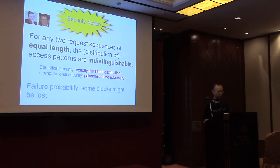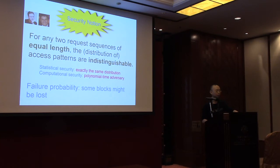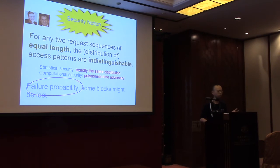There are two notions of security. Statistical security means that if you use randomness in your implementation of the ORAM, the distribution of the access pattern should be exactly the same for two sequences. For computational security, we only need to be secure against polynomial-time adversaries — for example, you are allowed to use a PRF in the design of the ORAM. There is also a notion of failure, where failure means some blocks might be lost during shuffling. In this talk, the ORAM will have some very small failure probability.